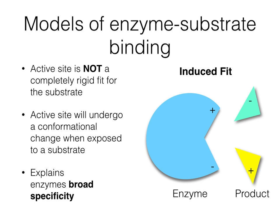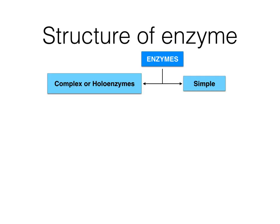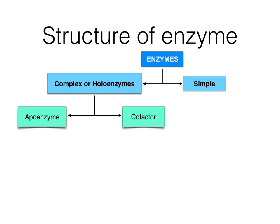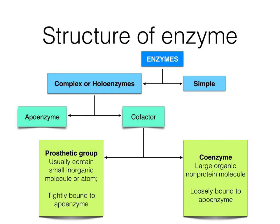Let's move on to the structure of an enzyme. Some enzymes are made up purely of proteins — we refer to them as simple enzymes. However, there are some enzymes that are complex, and we call them holoenzymes. A holoenzyme is made up of a cofactor as well as the apoenzyme. The apoenzyme is the protein portion of the enzyme, whereas the cofactor is the non-protein part, which can be either a prosthetic group or a coenzyme. The prosthetic group is tightly bound to the apoenzyme, whereas the coenzyme is loosely bound to the apoenzyme.